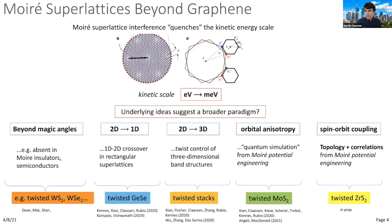A broader perspective asks whether this physics can generalize to materials away from graphene, in particular other van der Waals materials such as transition metal dichalcogenide multilayers. Starting with a material where the intrinsic kinetic energy scale is at the eV level, as one composes multiple layers and stacks them at a twist, the question is whether quenching the kinetic energy scale can bring competing effects to the forefront.